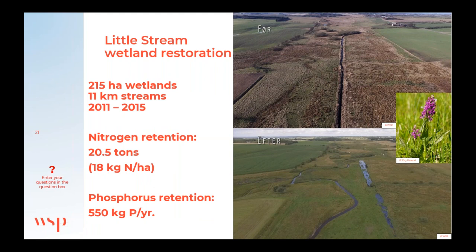The next example is also a nitrogen wetland, located in the northern part of Denmark along Little Stream, completed in 2015. There were 215 hectares of wetlands and 11 kilometers of streams restored. The stream was raised, re-meandered, and reconnected to the floodplain. Since the restoration, five areas with alkaline fens have been located — significant because these habitats are protected by the EU Habitat Directive. Four areas with broad-leaved marsh orchids have also been found, which is a very good indication of a successful restoration.